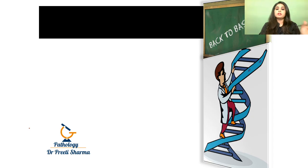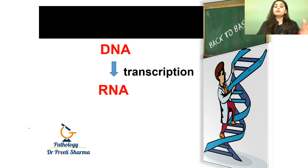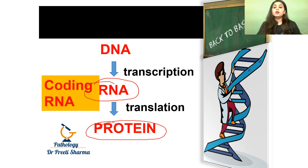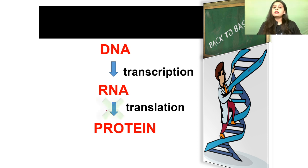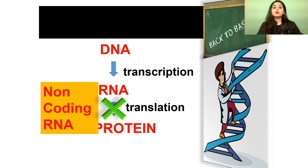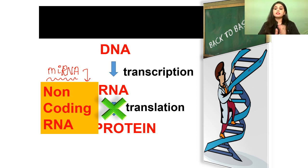Let's come to microRNA. Going back to basics: DNA undergoes transcription to form RNA, and RNA undergoes translation to form a protein. An RNA that results in protein formation is a coding RNA. If the RNA cannot form a protein, you call it a non-coding RNA — and that is what microRNA is. It is a type of non-coding RNA, meaning after the RNA, the protein is not going to form.